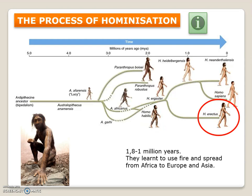Then we have the Homo erectus, which means 'upright man.' This species is very similar to us but also still similar to monkeys. They learned how to use fire and spread from Africa to Europe and Asia. The Australopithecus afarensis, Homo habilis, and Homo erectus all first appeared in Africa, and it was Homo erectus that was the first to go out and colonize Europe and Asia.